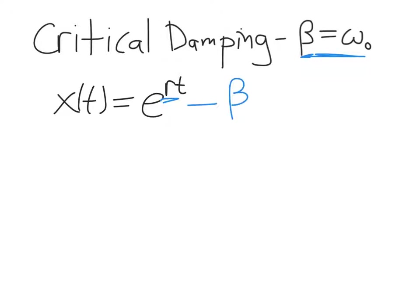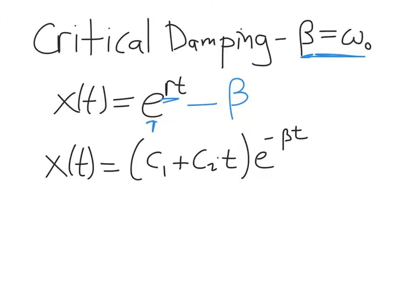Because we have a second-order differential equation, we require two linearly independent solutions. When both roots are identical, we have to modify our assumed solution to make two linearly independent solutions. The solution in the case of critical damping takes the form: x(t) = (c₁ + c₂t) e^(−βt). In this case, we also don't get oscillations, but we can get solutions that exhibit some interesting behavior.